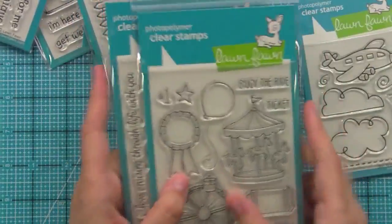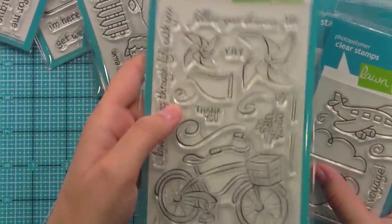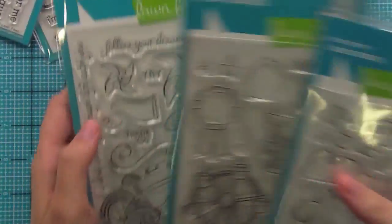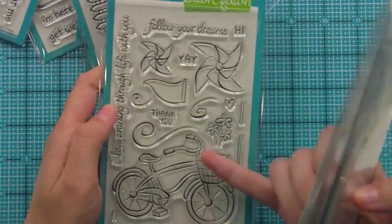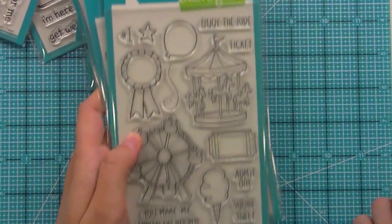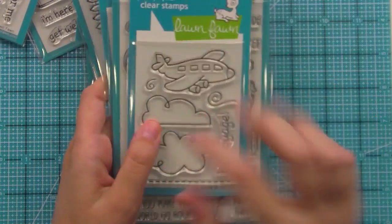So these are the nine Lawn Fawn Summer releases. I'll go over them one more time real fast. You've seen these on the blog. There's beautiful design team samples you have to go see. Cruising Through Life, Admit One, and Bon Voyage.